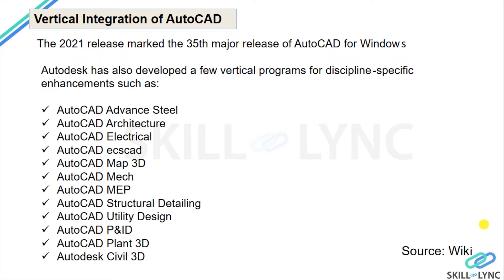Other vertical programs include AutoCAD MEP for Mechanical, Electrical, and Plumbing — covering HVAC duct design, electrical circuits, and plumbing and firefighting systems. There's also AutoCAD Structural Detailing for reinforcement and rebar detailing, AutoCAD Utility Design, AutoCAD P&ID, AutoCAD Plant 3D for industrial design, and AutoCAD Civil 3D, which is very popular for infrastructure development, highway projects, and survey drawings.